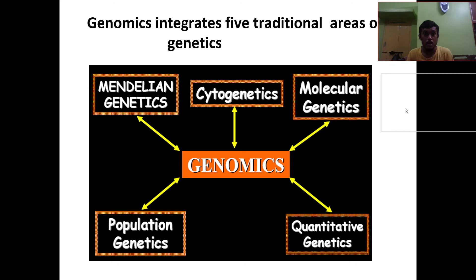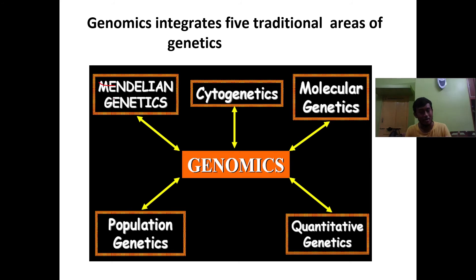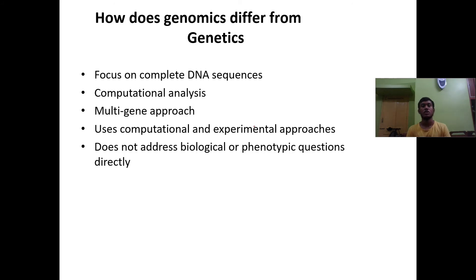Genomics lays a very important role in the field of genetics. What genomics does is integrate five traditional areas of genetics: Mendelian genetics, cytogenetics, molecular genetics, population genetics, and quantitative genetics. All these areas of the field of genetics are integrated together under genomics.